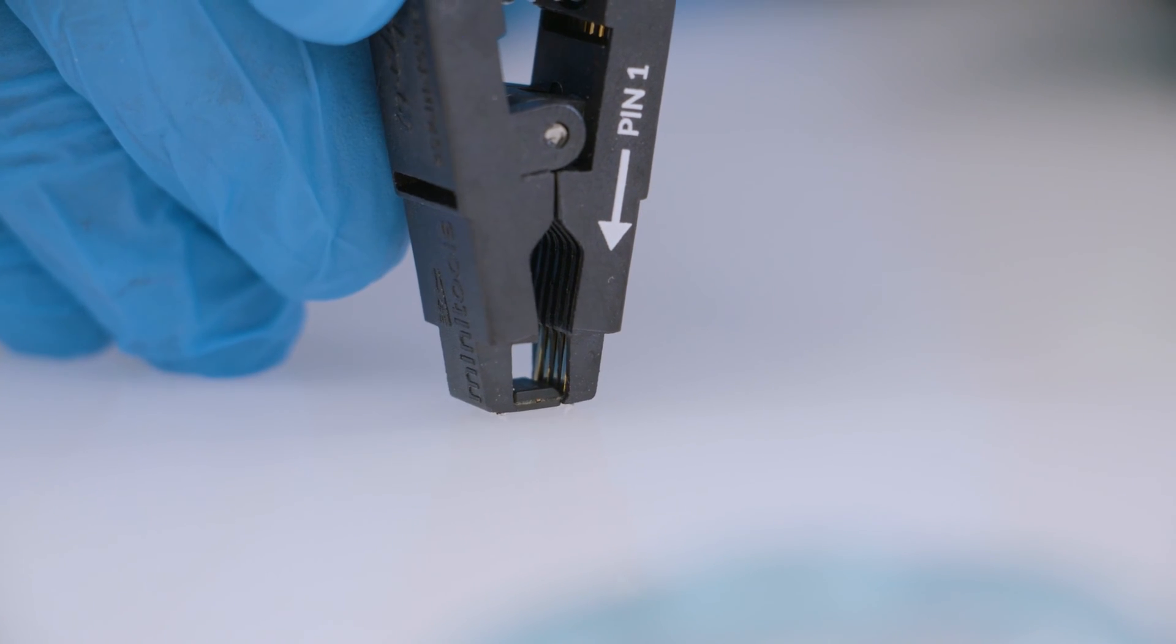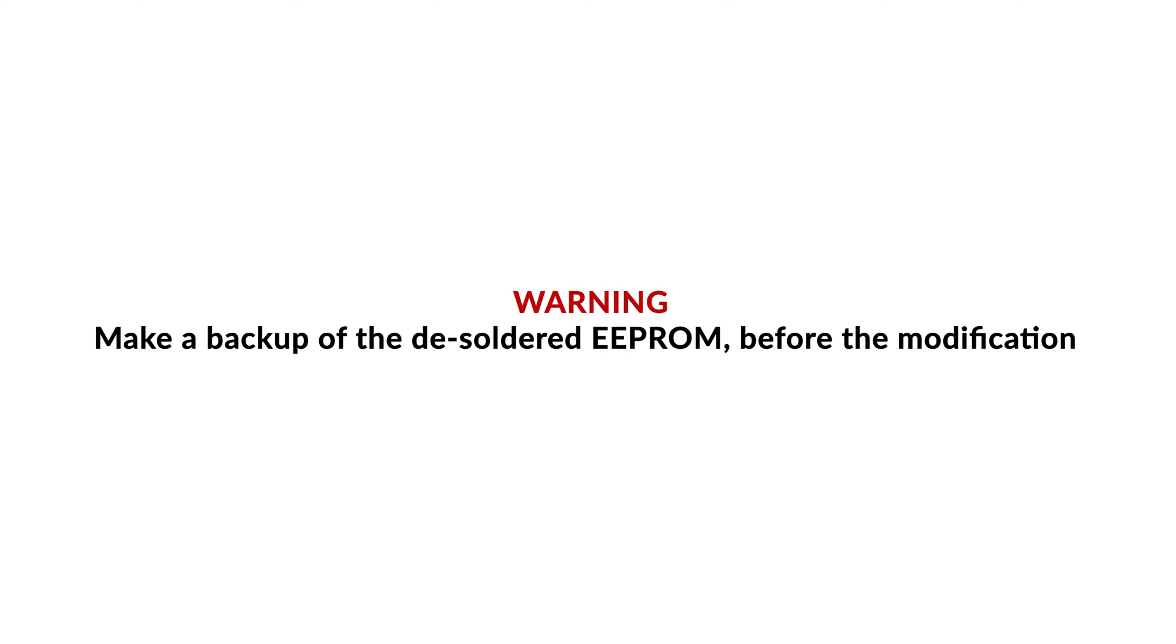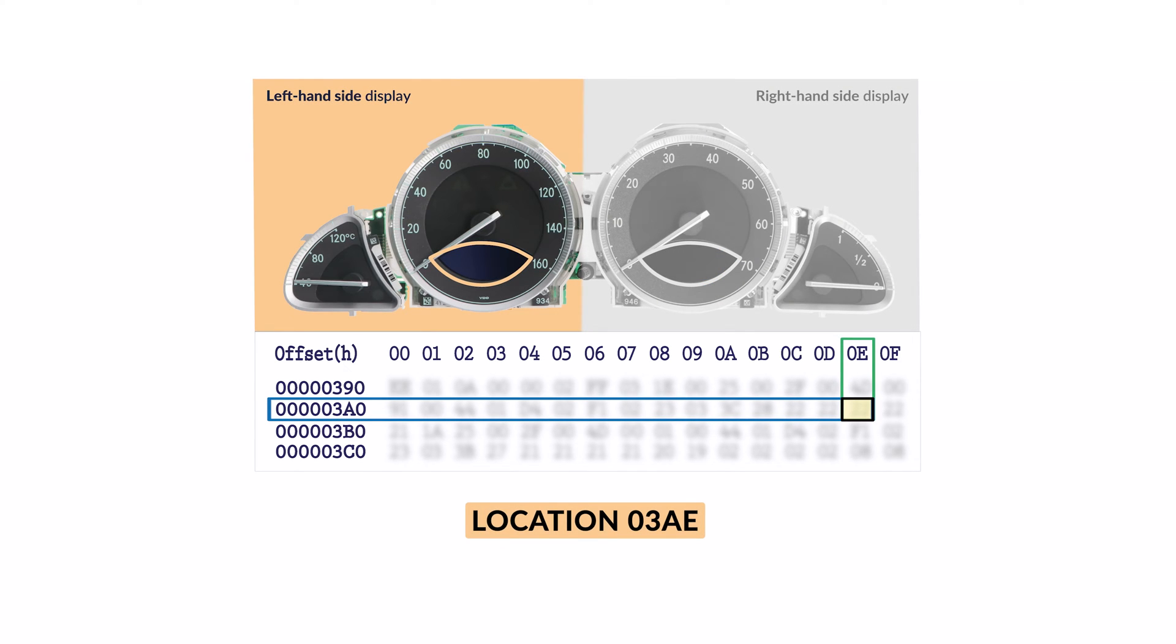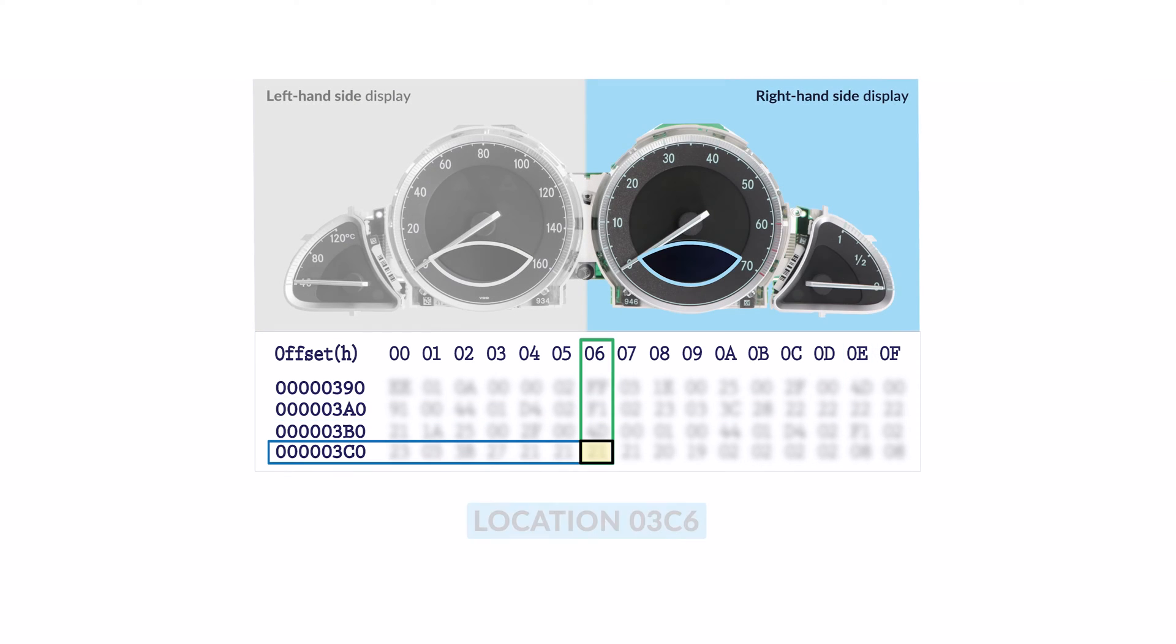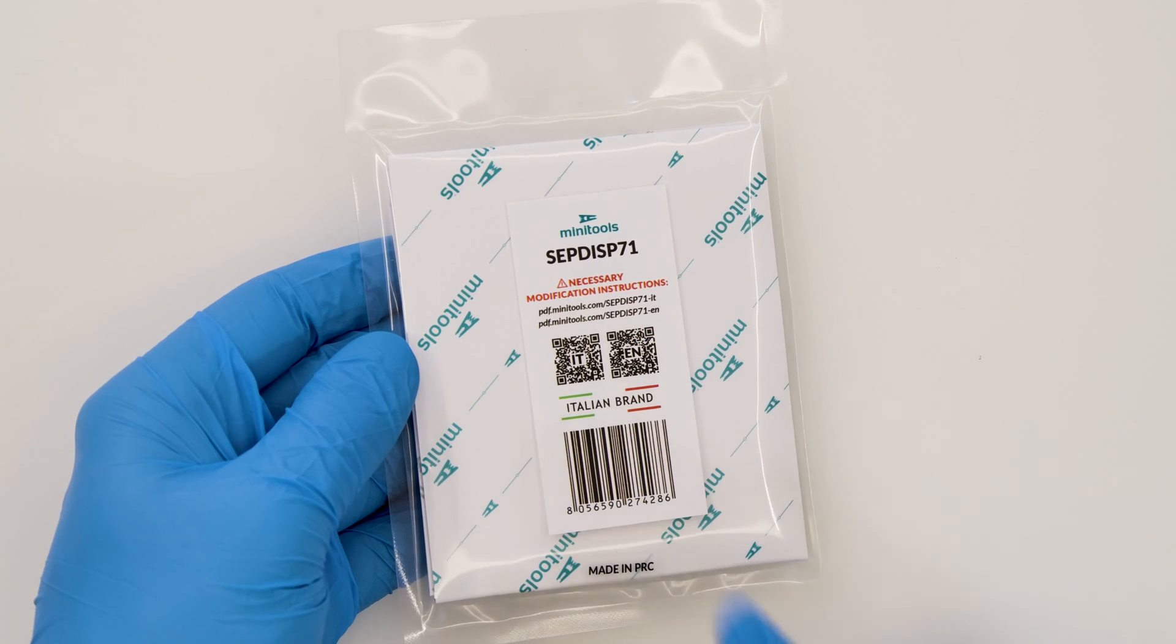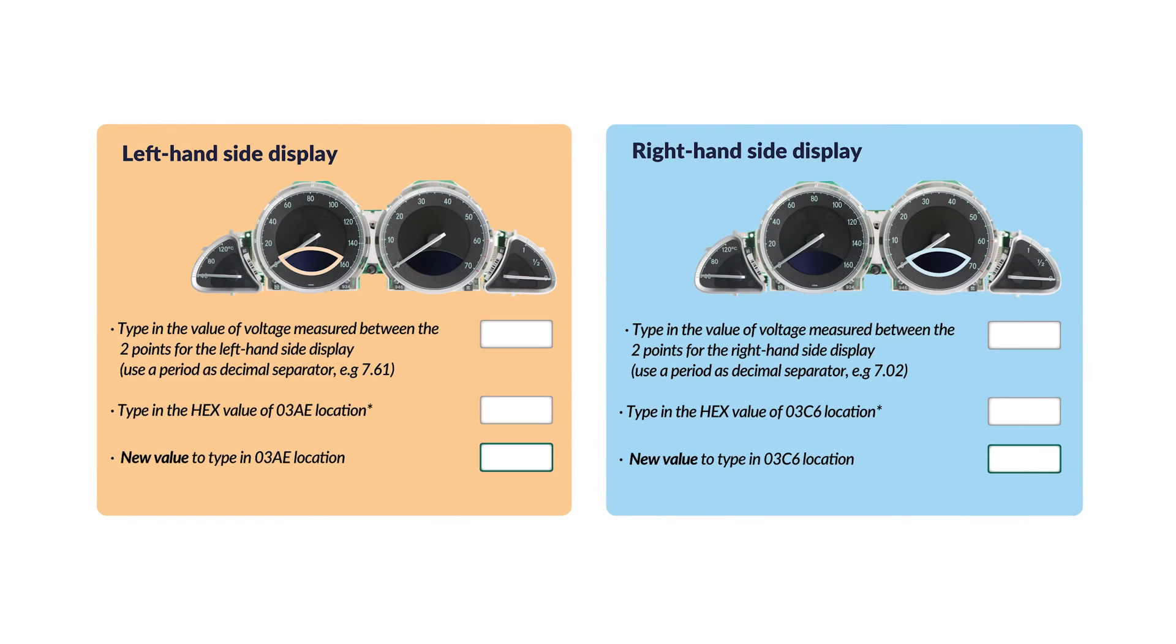Clip the EEPROM connecting it to the programmer. Set the reading in hexadecimal and make a backup. Identify on the EEPROM the location 03AE for the left-hand side display and 03C6 for the right-hand side display. Scanning the QR code or following the link on the product label, open the PDF with the instructions to use the specific calculation tool to do the modification.